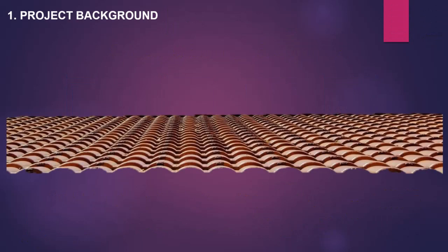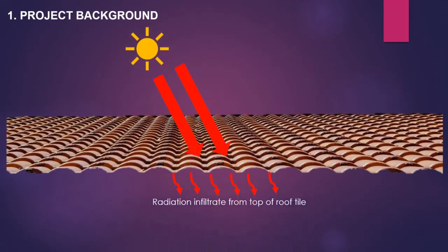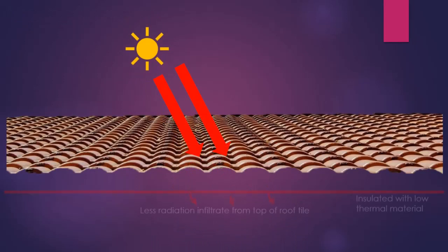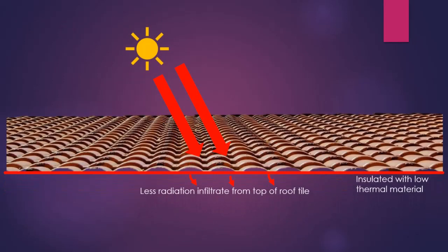The roof is the main building component that contributes heat in the house during the daytime, because it is exposed more directly to solar radiation from the sun. By using roof covering with lower thermal transmittance U-value, heat transfer to the house can be reduced.